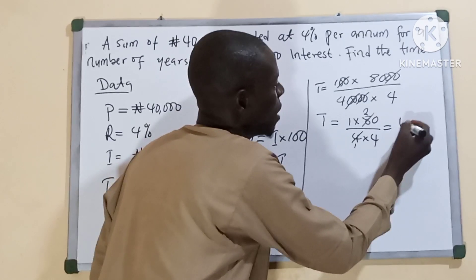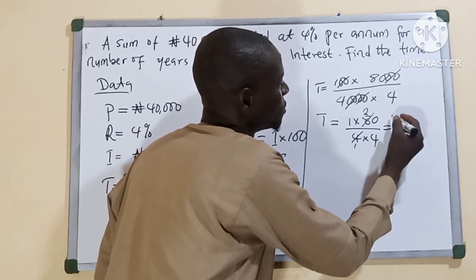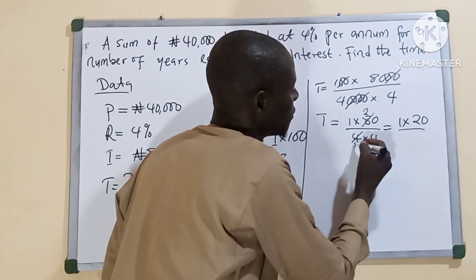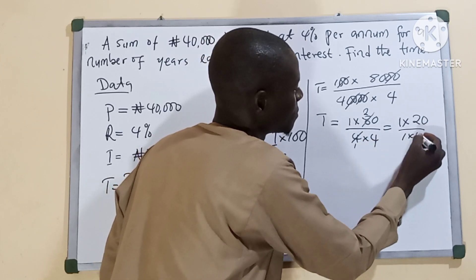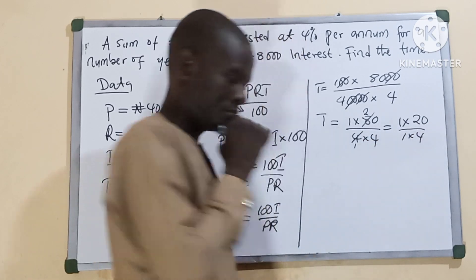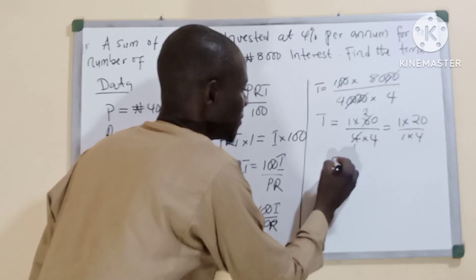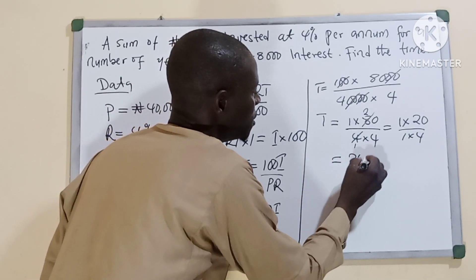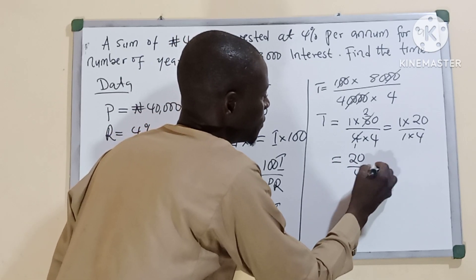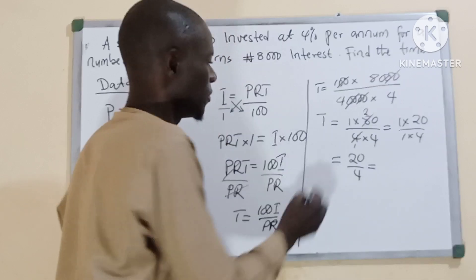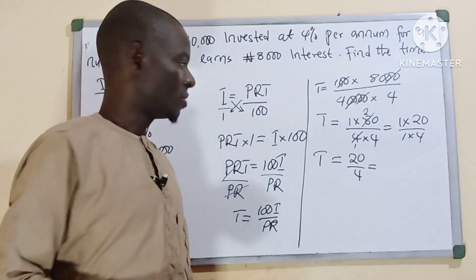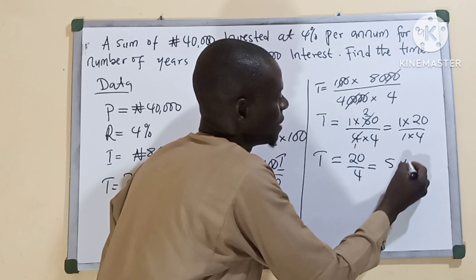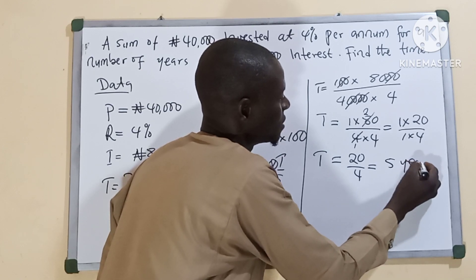So we have 1 times 20 all over 1 times 4, which is the same as 20 all over 4. 20 over 4 is what? It's 5. That is 5 years.